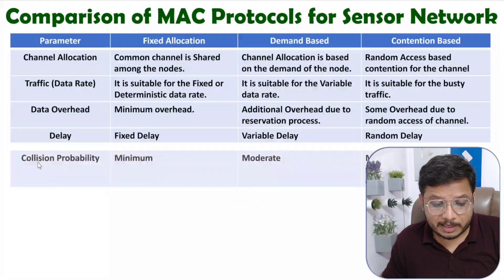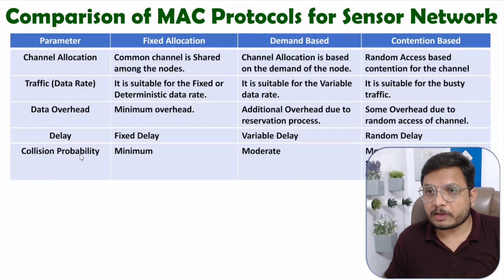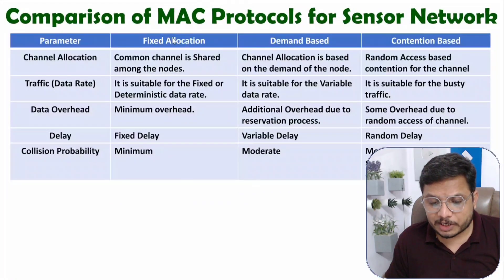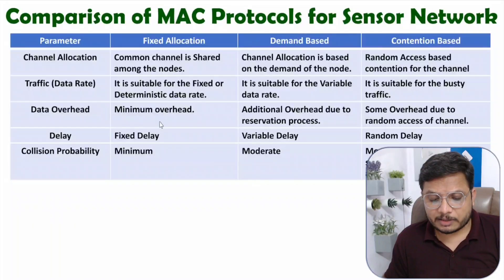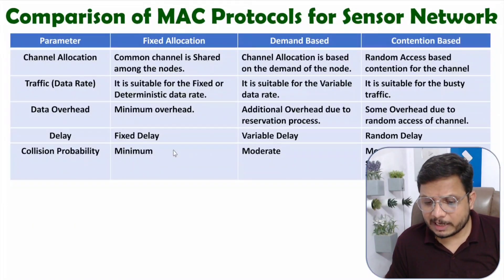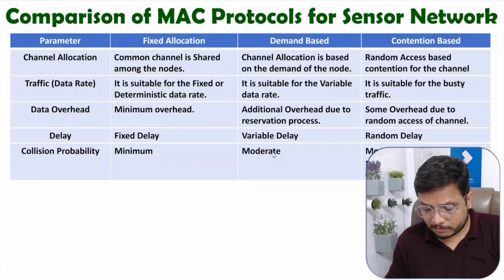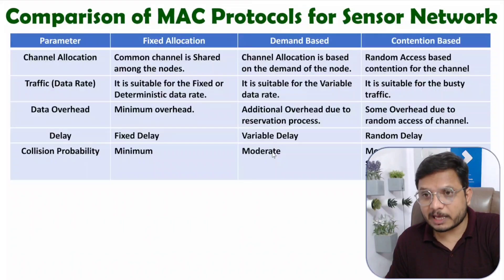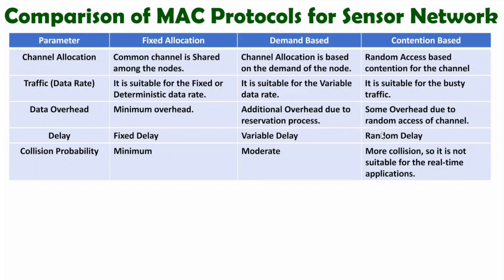The next parameter is collision probability. In fixed allocation, you have minimum collision probability. In demand-based, moderate collision probability is there. In contention-based random access, more collisions happen, and contention-based protocols are not suitable for real-time applications.